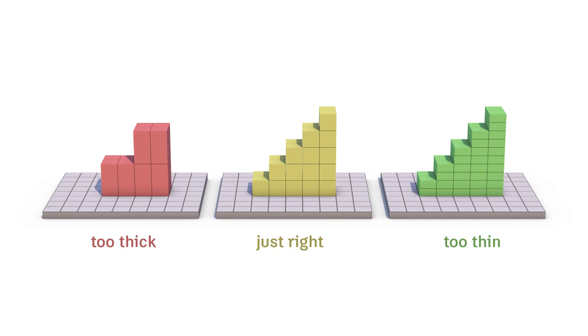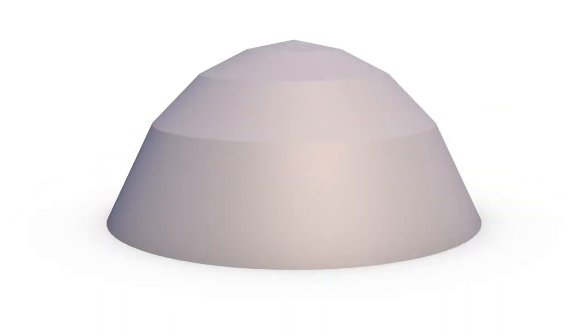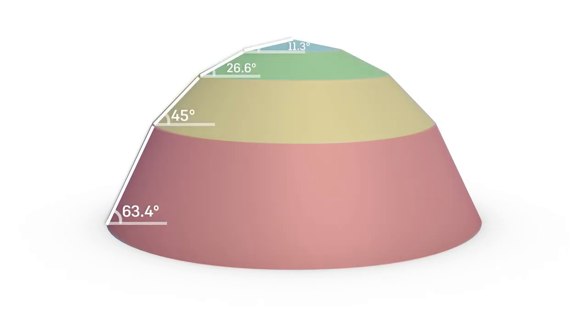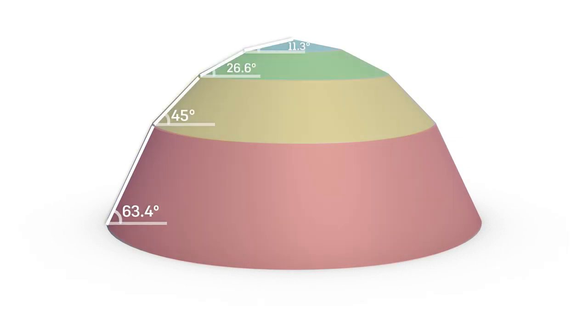That's how we would determine the optimum layer thickness for a cone, a pyramid, or a triangular prism. But what about a shape with sections that each have a different slope? This dome has four different slopes. If we slice it at 100 microns, the more vertical section is sliced at the optimum resolution, but the shallower slopes are not well approximated.